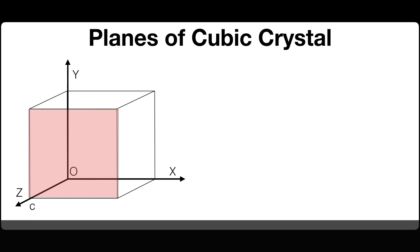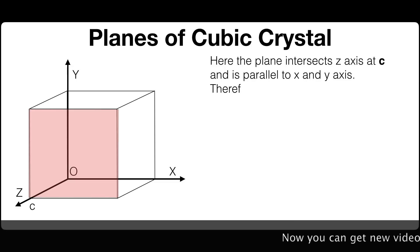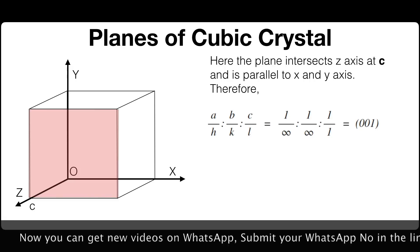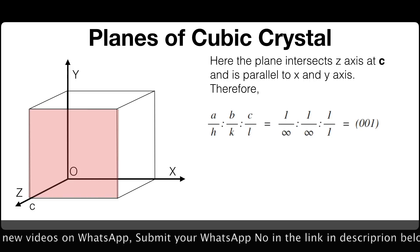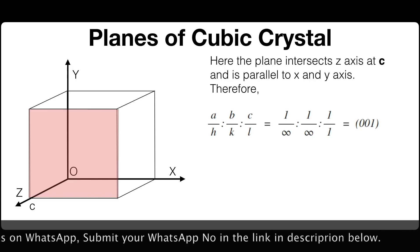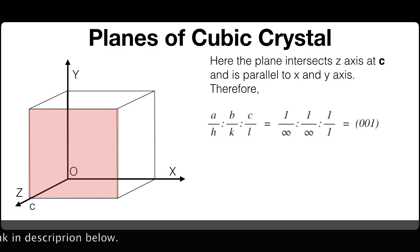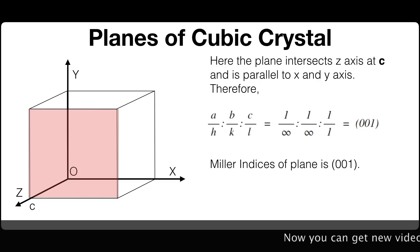Here the plane intersects the z-axis at C and is parallel to the x and y-axis. Therefore the ratios A/H : B/K : C/L = 1/∞ : 1/∞ : 1/1, which comes to 0, 0, 1. So the Miller indices of this plane is (0 0 1).